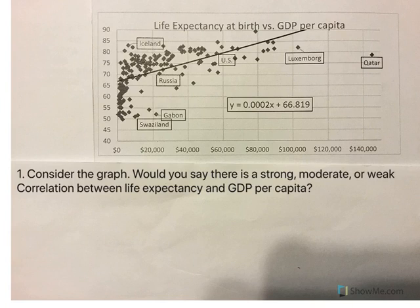We're going to look at a scatterplot of life expectancy at birth versus GDP per capita for countries around the world. So first we're going to consider the graph. Would you say there is a strong, moderate, or weak correlation between life expectancy and GDP per capita? You can answer this however you think is best, but this is my opinion.